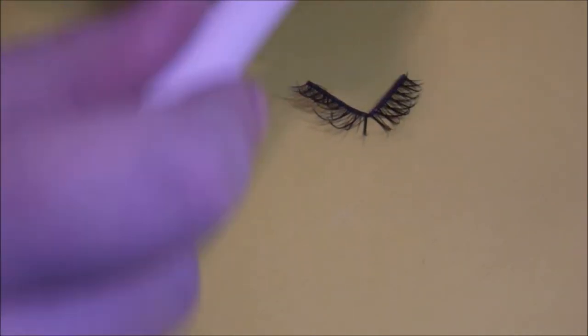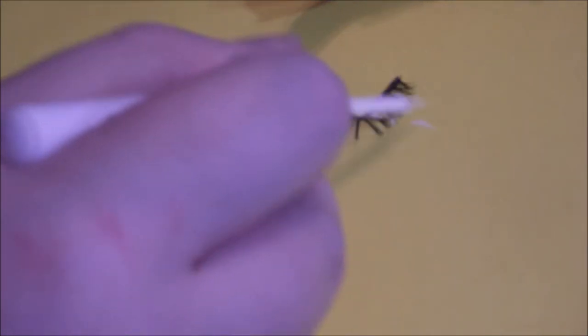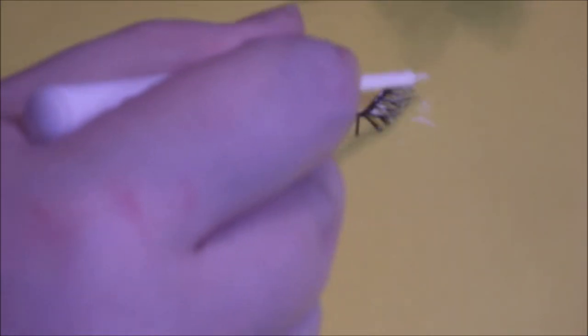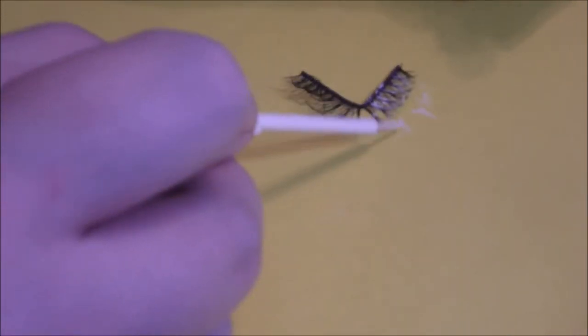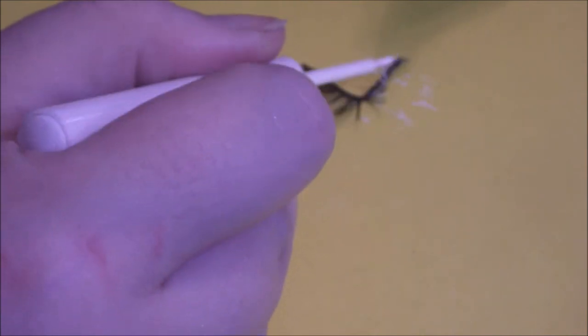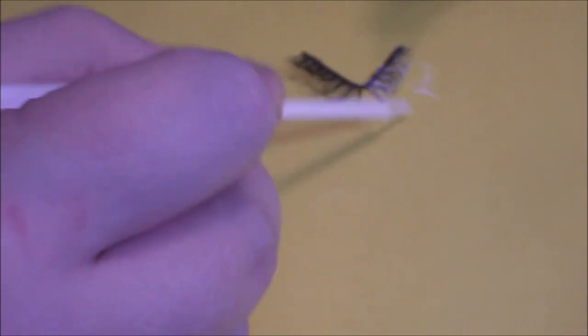Now the reason I'm doing the liner first is because if you go straight in with the face paint, it will kind of wilt the lashes. If you do it with liner, it'll give it some structure and it's better for the lashes even though they are fake lashes.